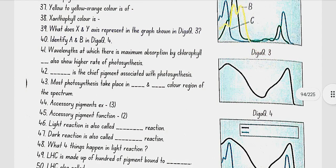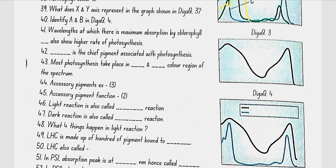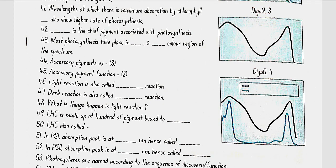In diagram 3, the X-axis shows the rate of photosynthesis and the Y-axis shows the wavelength of light. In diagram 4, A is the rate of photosynthesis and B is the absorption. Wavelengths at which there is maximum absorption by chlorophyll A also show a higher rate of photosynthesis.